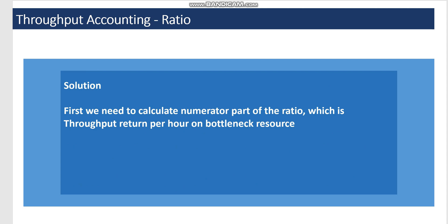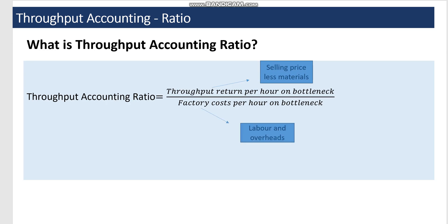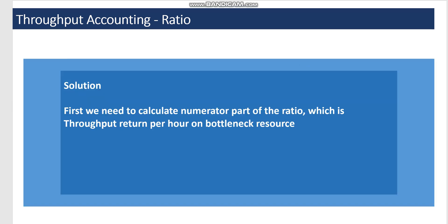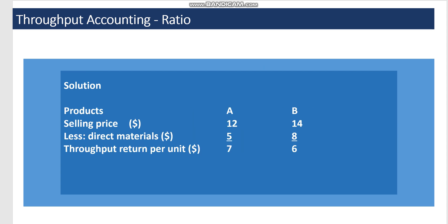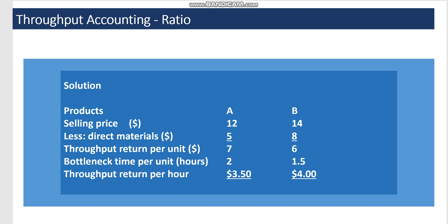We need to calculate the numerator: throughput return per hour on the bottleneck resource. Throughput return per unit is selling price minus direct material cost — for product A that is 12 minus 5, giving seven dollars; for B it is 14 minus 8, giving six dollars. Dividing by the time per unit on the bottleneck (two hours and one-and-a-half hours respectively), we get throughput return per hour of three dollars fifty for A and four dollars for B.